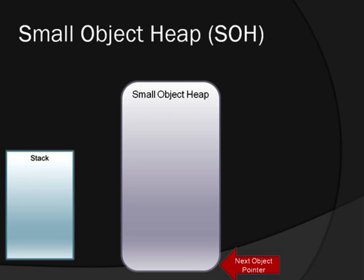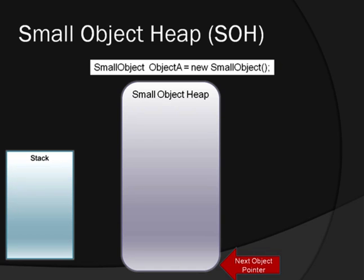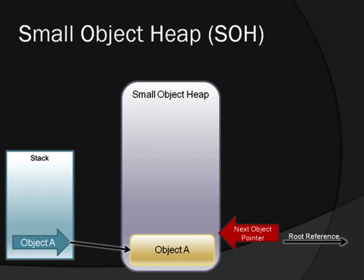Let's have a look at what goes on under the hood of the small object heap. On the slide, you can see the small object heap and the NextObjectPointer, which is placed at the beginning of the heap when the application starts. We've also got a stack that is used to hold object references created during function calls. When object A is created, it's allocated onto the heap at the location pointed to by the NextObjectPointer. A reference is placed on the stack, and the NextObjectPointer is incremented by the size of the object.